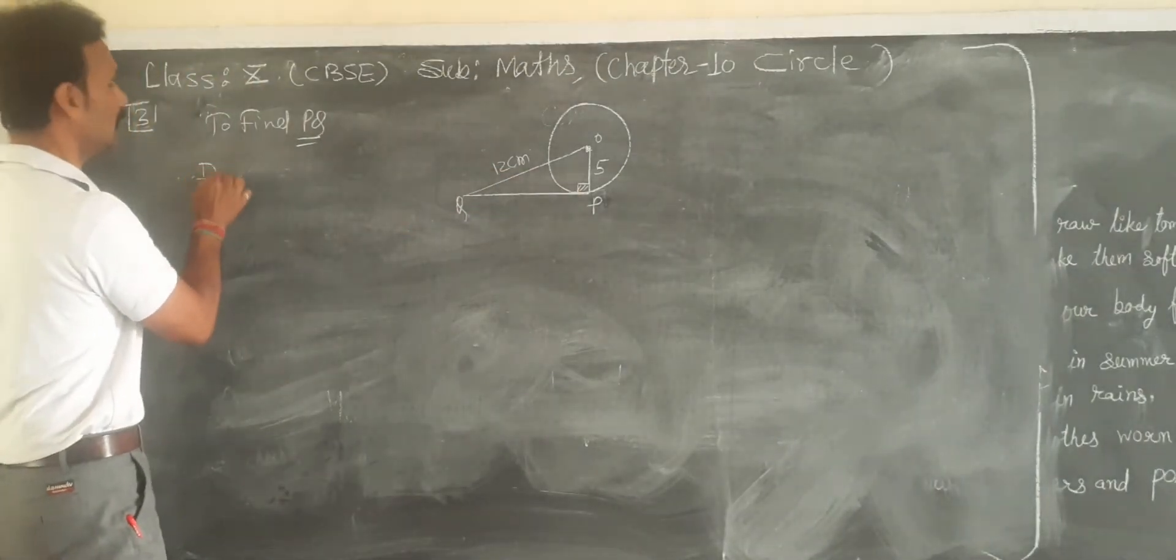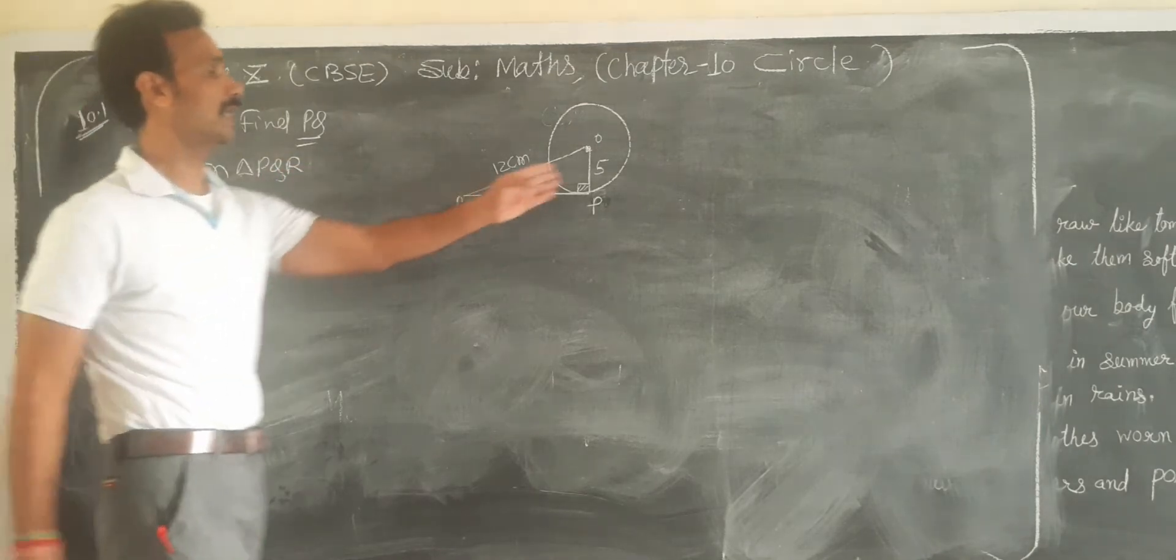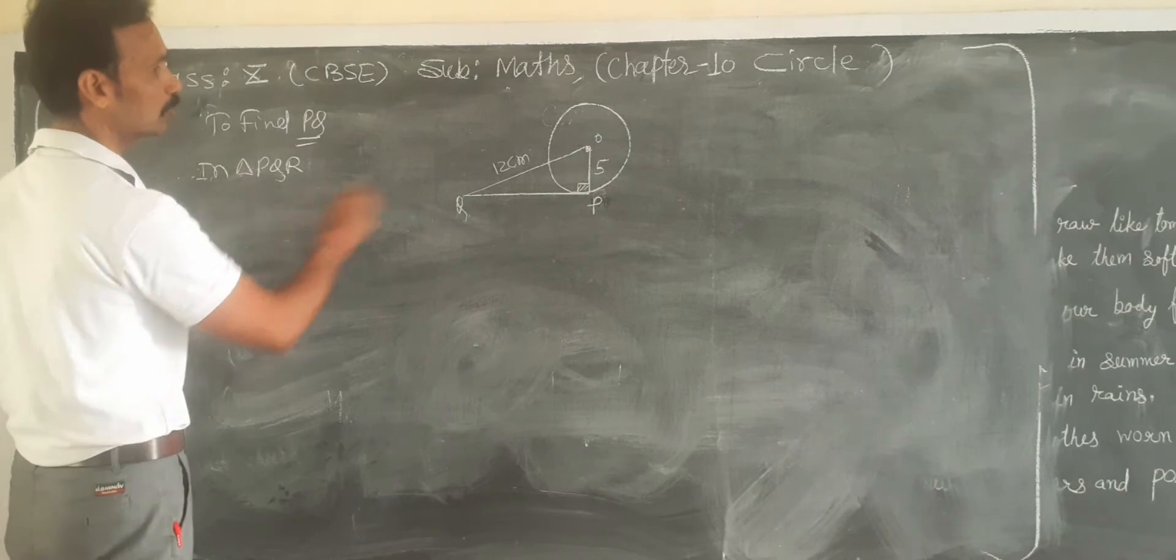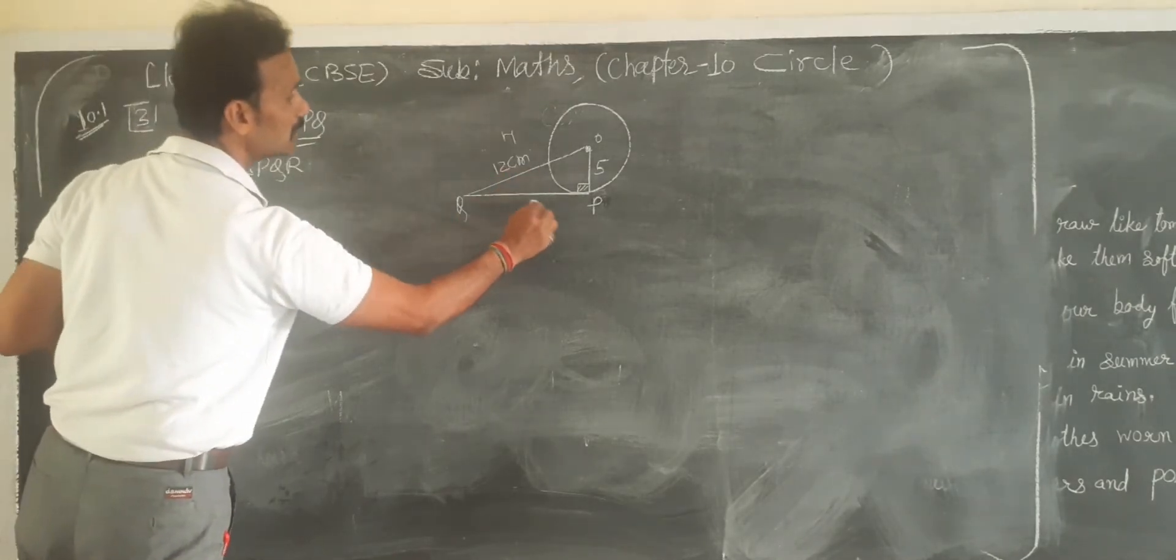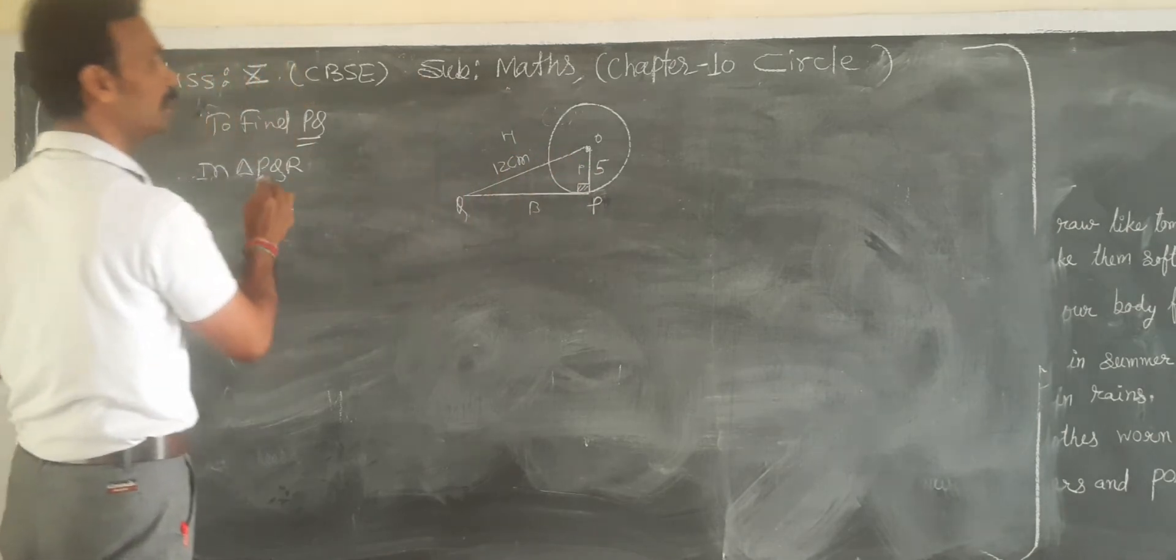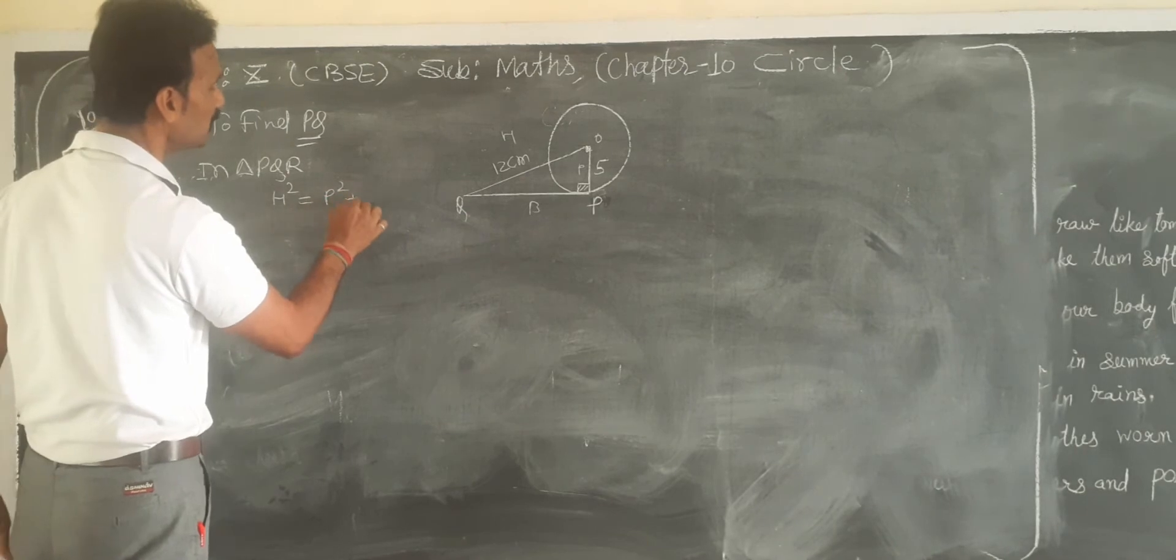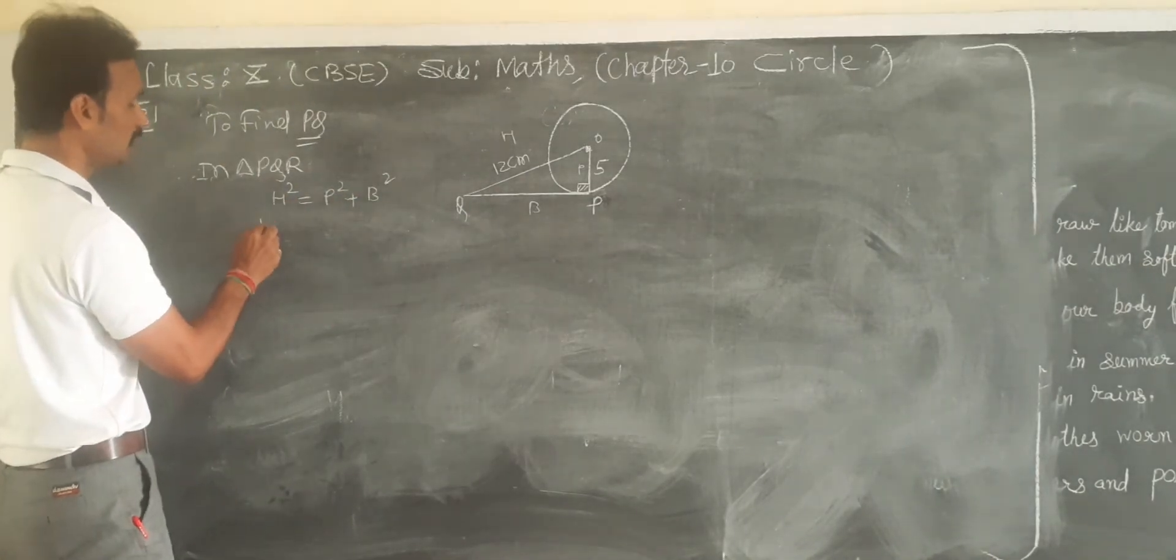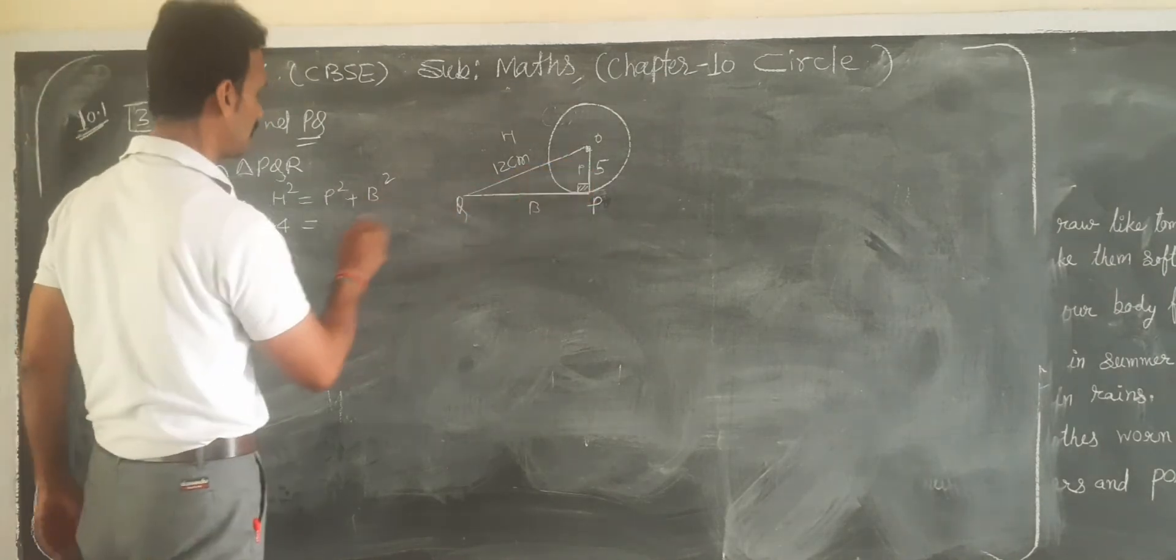Then in triangle OPQ, it is a right angle, so we will apply Pythagoras theorem. Pythagoras theorem means hypotenuse square equals perpendicular square plus base square. So hypotenuse square...